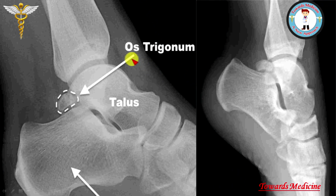Now we are going to discuss about Os Trigonum. Os Trigonum is a small bone that is present behind the talus.